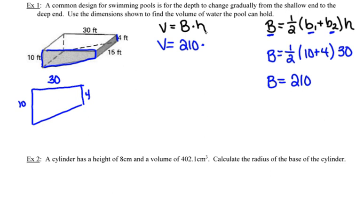And recall that the height of the prism is the distance between the two bases. So the distance between the trapezoid at the front of the prism and the trapezoid at the back of the prism, in this picture, is 15 feet.